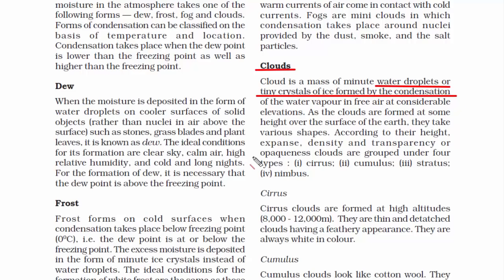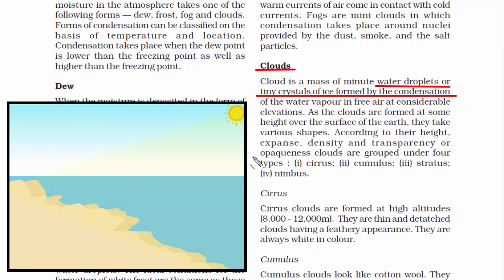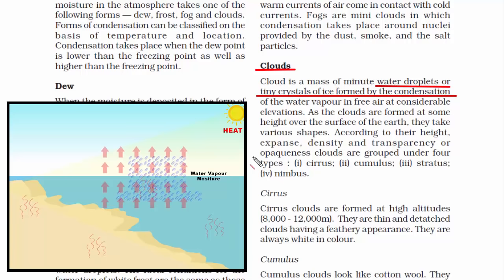Let's look at the cloud formation process. First, the heat from the sun warms the ground, making the surface of the earth warm along with the surrounding air. Warm air rises from ground level, and since air around us contains water vapor or moisture, when warm air rises it also takes the moisture along with it. As altitude increases, temperature decreases.